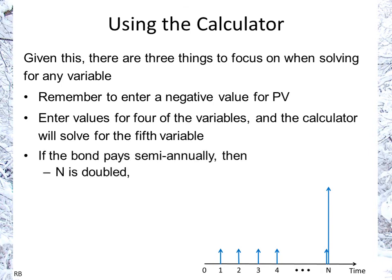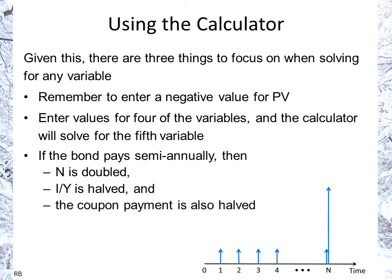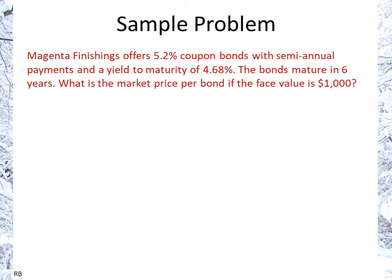If the bond pays semi-annually, you have to double N, halve I/Y, and the coupon payment is also halved because you're going to have twice as many payments per year. Now let's try a sample problem. Magenta Finishings offers 5.2% coupon bonds with a semi-annual payment and a yield to maturity of 4.68%. The bonds mature in six years.